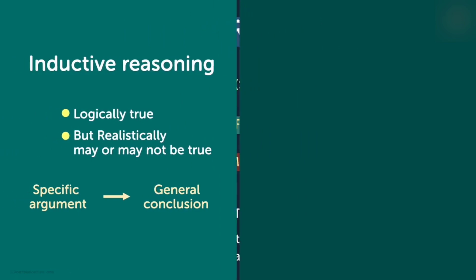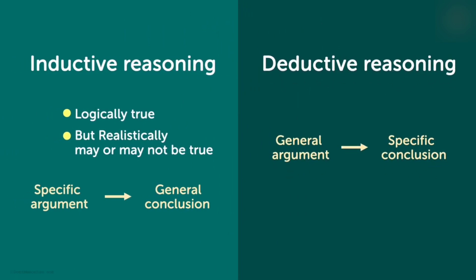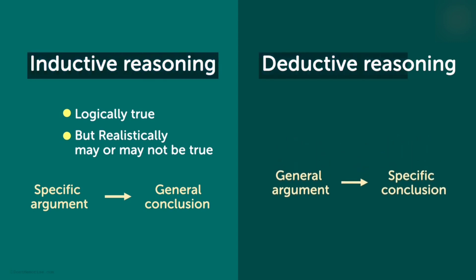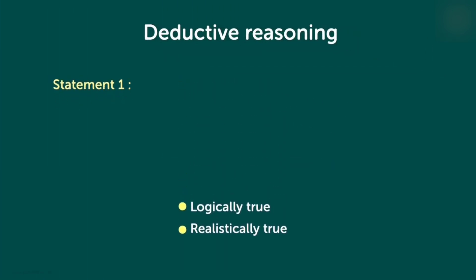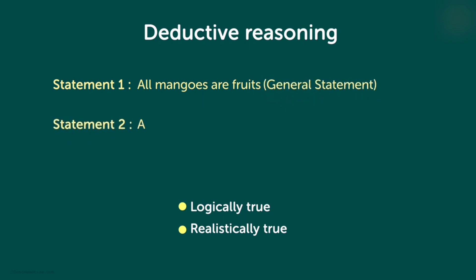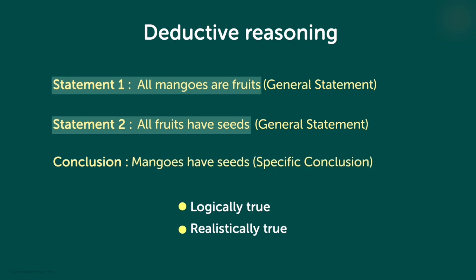On the other hand, we have deductive reasoning, where the approach is from a general argument to a specific conclusion. And unlike inductive reasoning, deductive reasoning is always true. For example, statement 1 says that all mangoes are fruits, and statement 2 says that all fruits have seeds. What conclusion can we draw from these two statements? We can draw a conclusion saying mangoes have seeds.